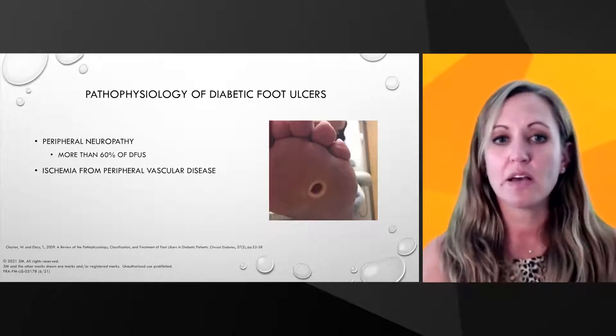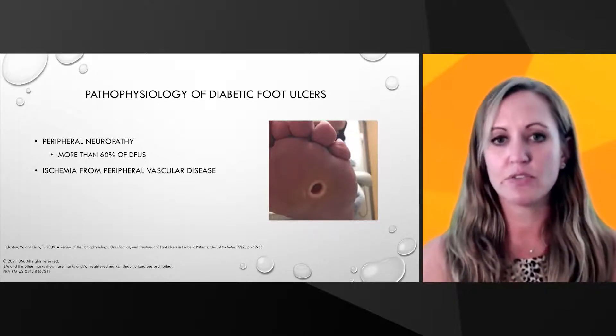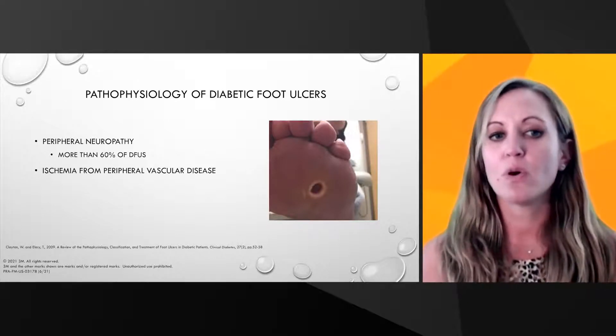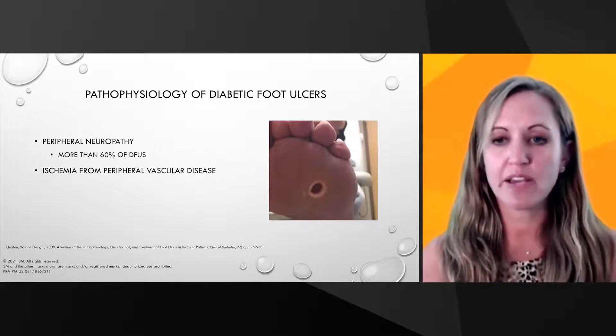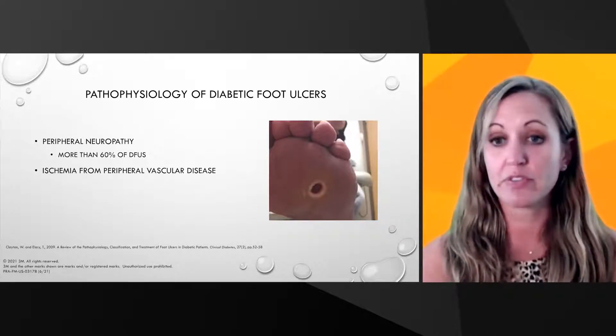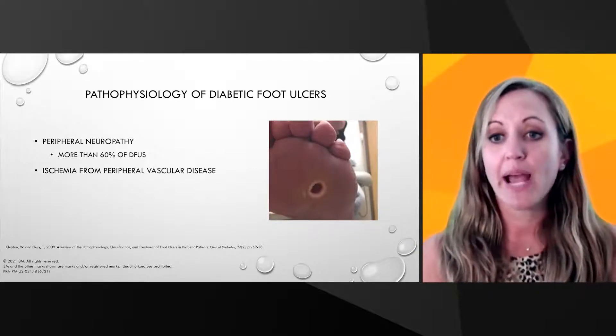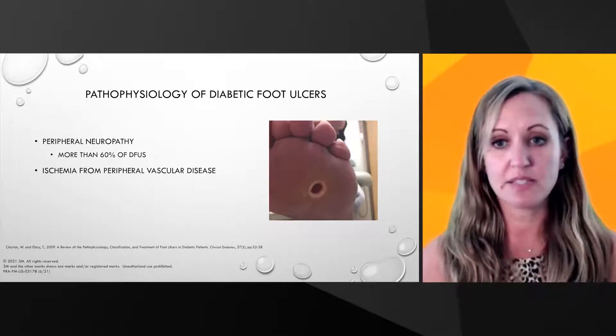Now let's look at the pathophysiology of a diabetic foot ulcer — how do these ulcers form? You don't just wake up one day and have an ulcer on your foot. More than 60% of diabetic foot ulcers are a result of peripheral neuropathy. There is also ischemia from peripheral vascular disease. These patients may lose sensation in their feet, and structural changes resulting from diabetes can cause internal pressure leading to ulcerations, as well as external pressure from their footwear.